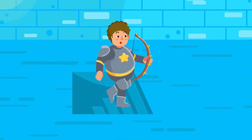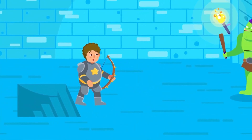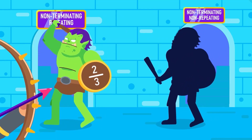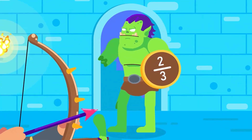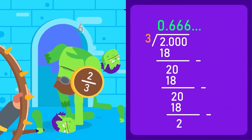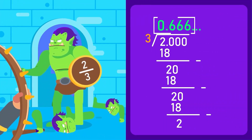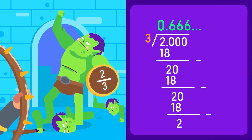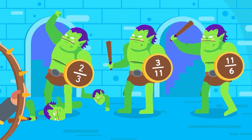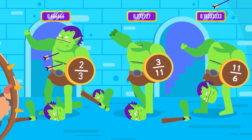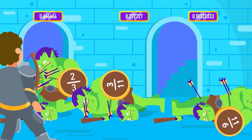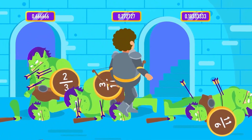The non-terminating decimal number also has two types: repeating and non-repeating decimal numbers. When we convert 2 over 3 to a decimal number, it will be a non-terminating repeating decimal number — that is, 0.6666666 and so on. That will be similar to 3 over 11 and 11 over 6, which also give repeating decimals that never end. They are all non-terminating repeating decimal numbers.